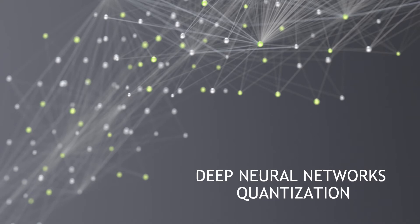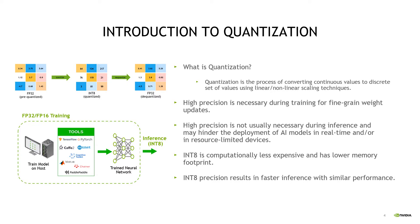Let's look into deep neural network quantization. Quantization is the process of converting continuous values into a discrete set of values using linear or non-linear scaling techniques. Higher precision is necessary during training for fine-grained weight updates, but it's not required for inference and sometimes may hinder the deployment of AI models in real-time. INT8 inference results in lower latency and lower memory footprint, hence there is a clear benefit in converting FP32 models into INT8.